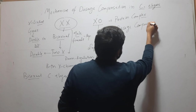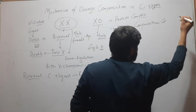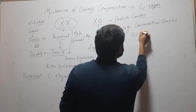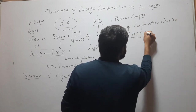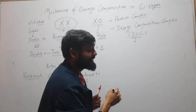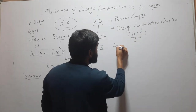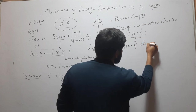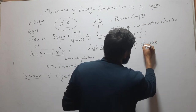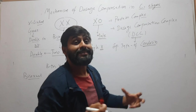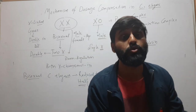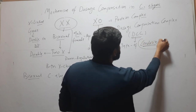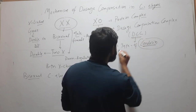This protein complex is called the Dosage Compensation Complex, or DCC. It is a special type of condensin complex. Condensins are proteins that condense chromosomes during cell division, and the DCC is a specialized form of this condensin complex.